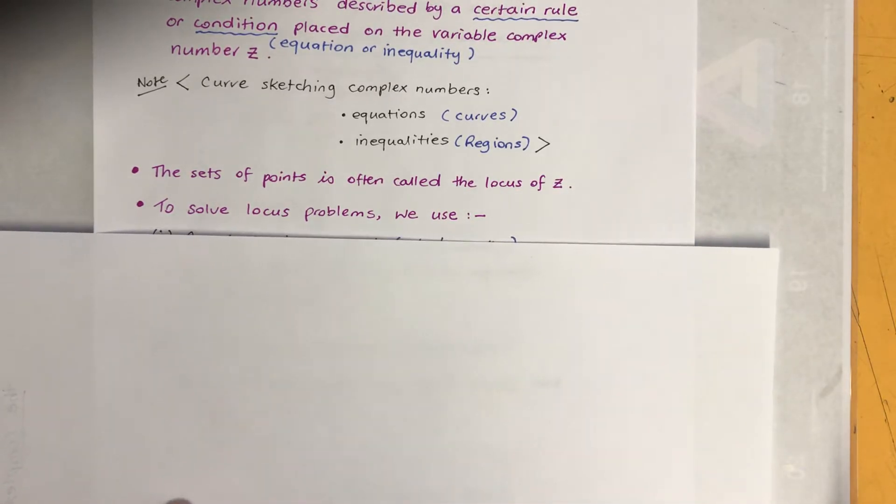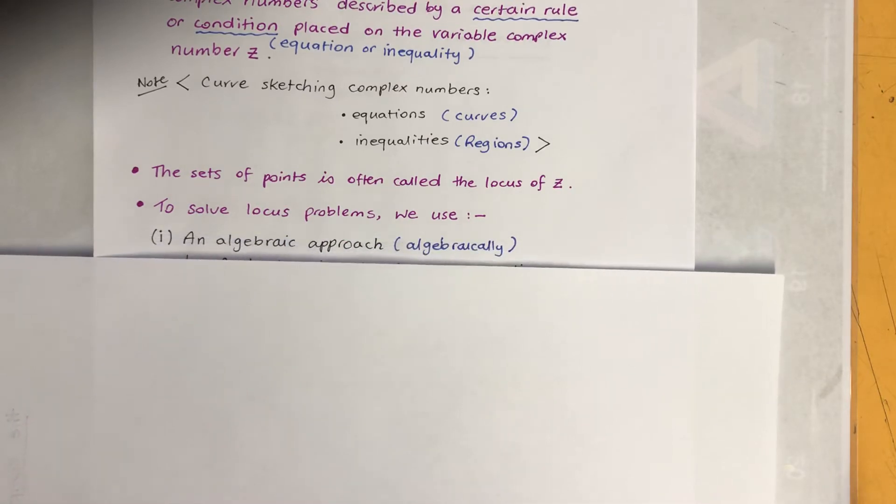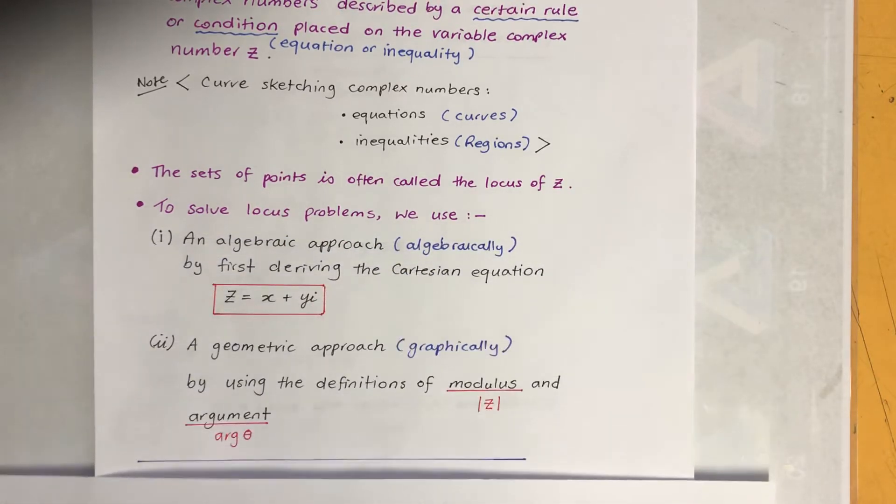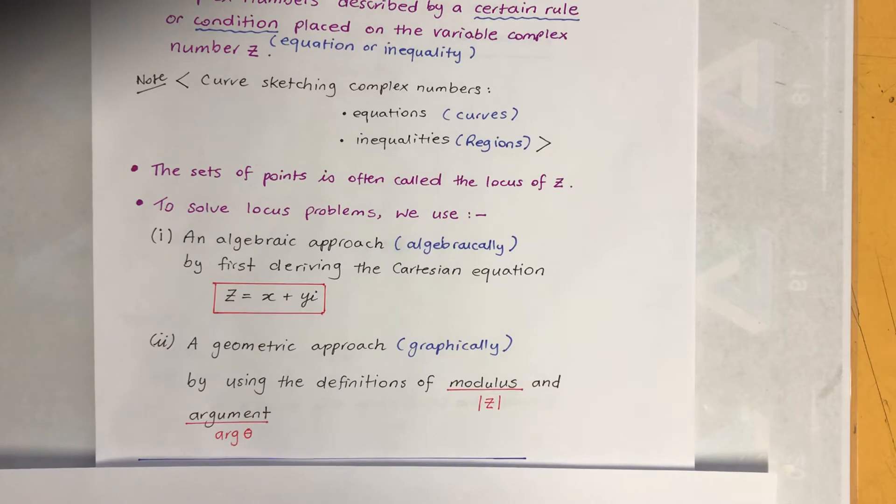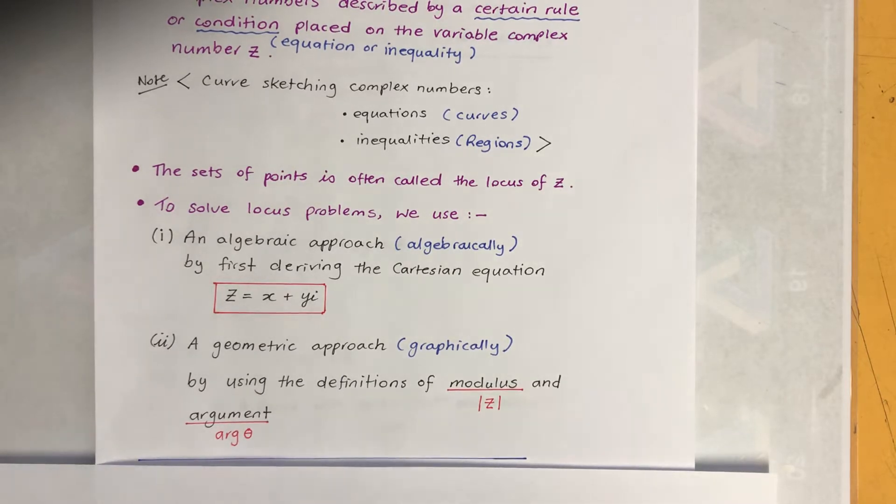To solve locus problems we use two approaches. The first one is an algebraic approach, so I solve algebraically by first deriving or getting the Cartesian equation, which is Z equals X plus YI. And the second is a geometric approach, just solving graphically by using the definitions of modulus and argument.